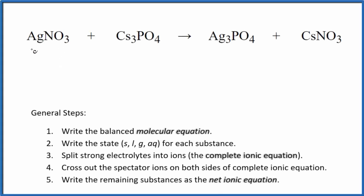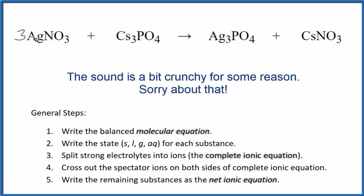Let's balance the net ionic equation for AgNO3 plus Cs3PO4. This is silver nitrate and this is cesium phosphate. The first thing we need to do is balance the molecular equation. This up here is the molecular equation. I can see I have one silver atom here and three here. Let's put a three in front of the silver nitrate.